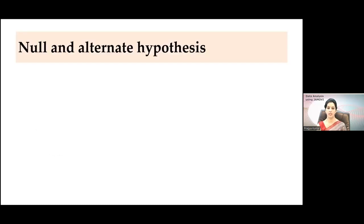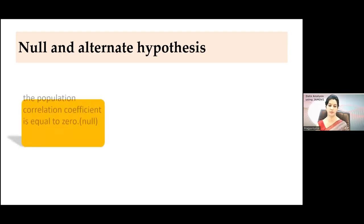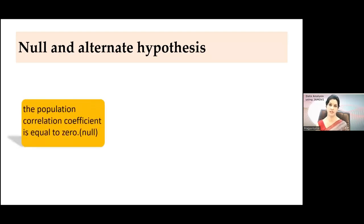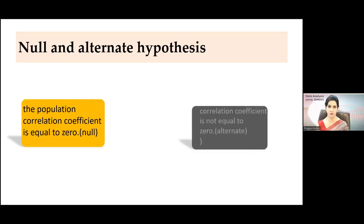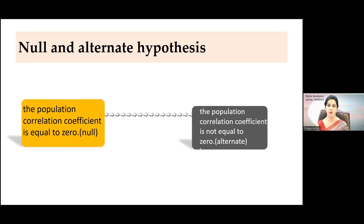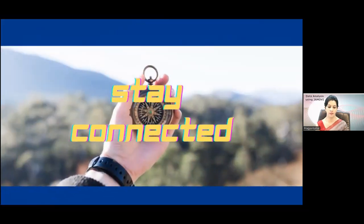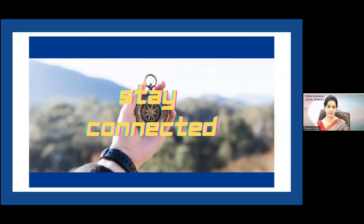Regarding null and alternate hypothesis: with the sample, we try to project the population parameter. The null hypothesis states that the population correlation coefficient is equal to zero, and the alternate hypothesis states that the population correlation coefficient is not equal to zero.